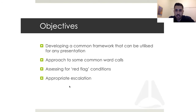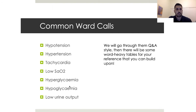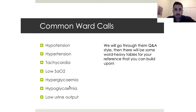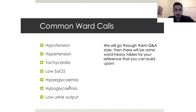Junior doctors should always feel comfortable escalating to seniors — there should always be help available and you should never feel like you're on your own. My experience has been that there's always been excellent support around the hospital. The common ward calls we'll go through are: hypotension, hypertension, tachycardia, low oxygen sats, blood sugars, and low urine output. The slides are word-heavy because they'll be recorded and uploaded to YouTube — you can use that information to make your own cheat sheets to have ready on your phone.